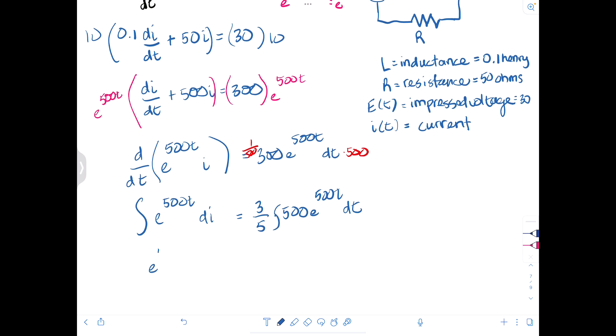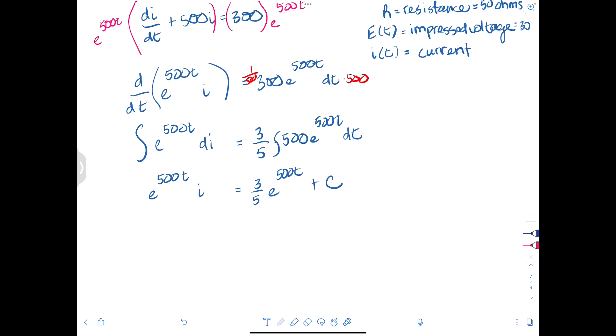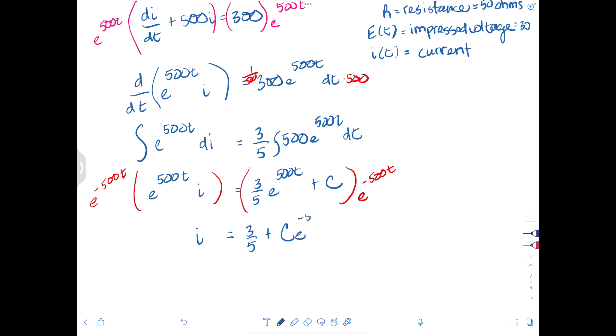And I will have e to the 500t times I equals 3/5 e to the 500t plus our constant of integration. And now we will have to clear out or isolate I. So if we multiply both sides by e to the negative 500t, then we will have I on the left side is equal to 3/5 plus C e to the negative 500t.